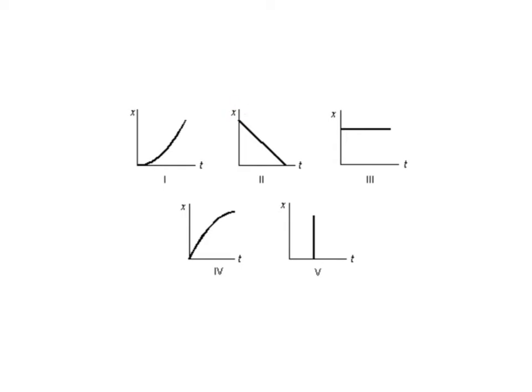This first graph is a position graph. We have a curved line that's headed up on the graph. If it's headed up, then it's moving in the positive or forward direction. We have a curved line, so curved lines mean we are accelerating, and if it's getting steeper at the end — flatter down here and steeper over here — that means it's speeding up.